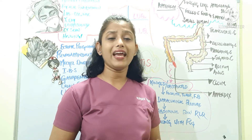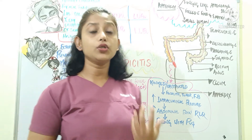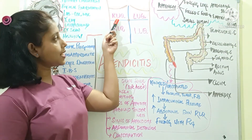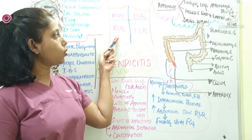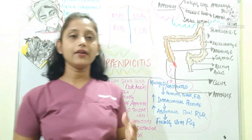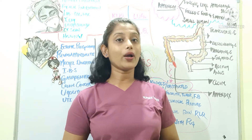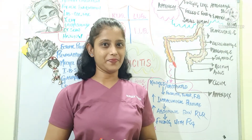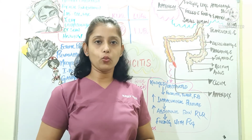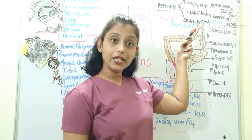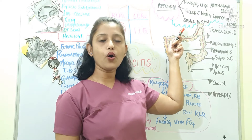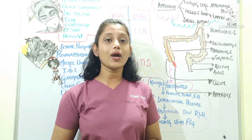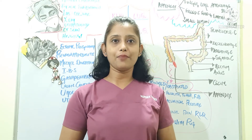There are four quadrants of the abdomen: right upper quadrant, left upper quadrant, right lower quadrant, and left lower quadrant. The appendix is located in the right lower quadrant. The lumen of the appendix is usually small, and this small lumen creates risk for this organ to have obstruction, which is discussed in detail about appendicitis.